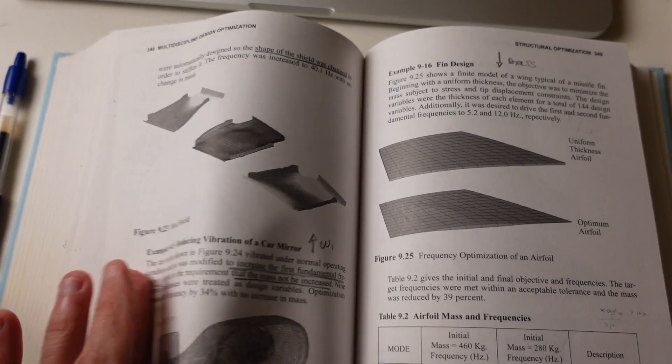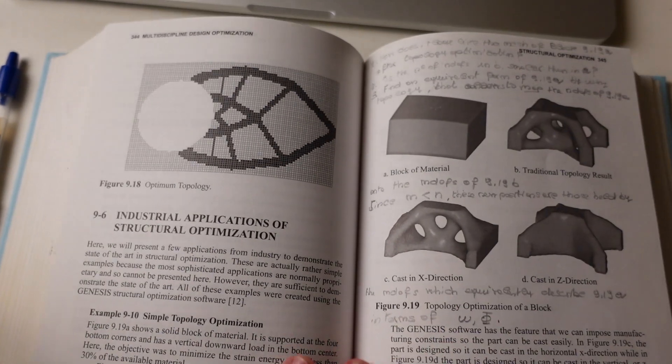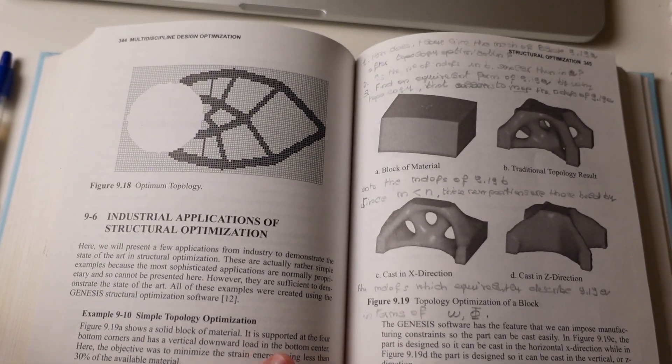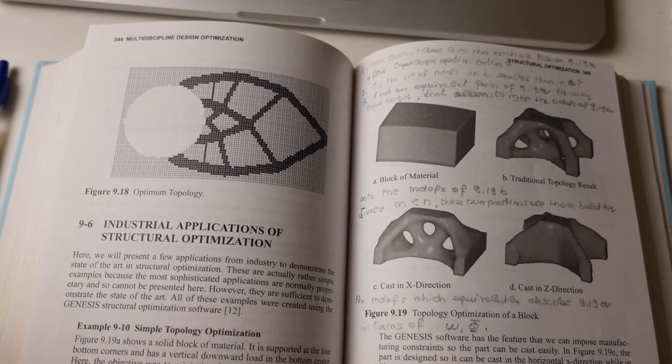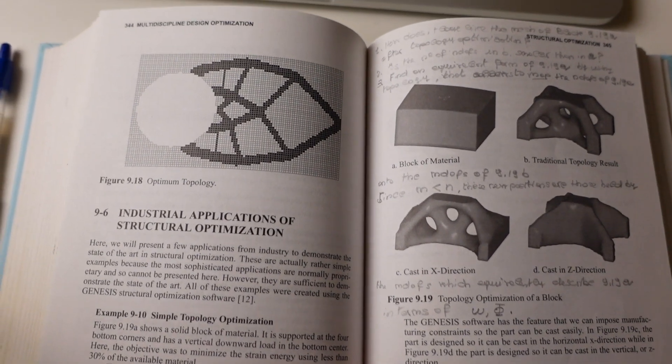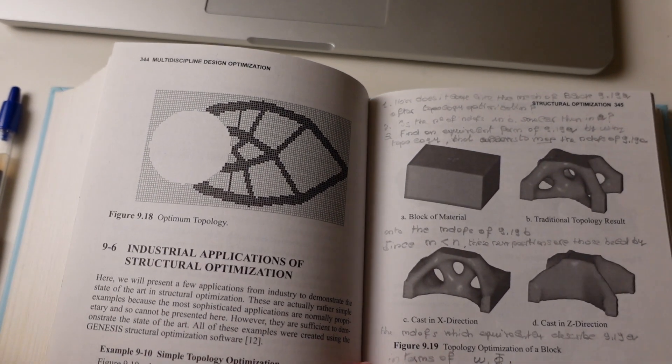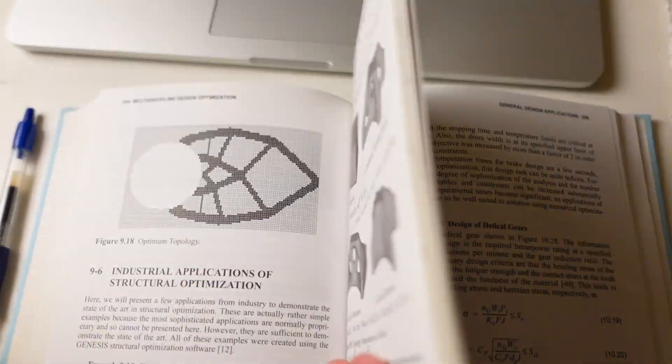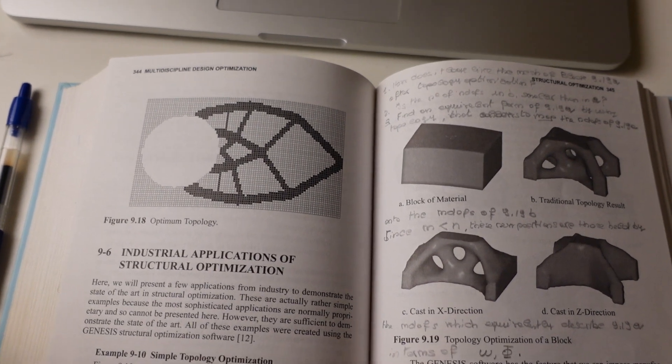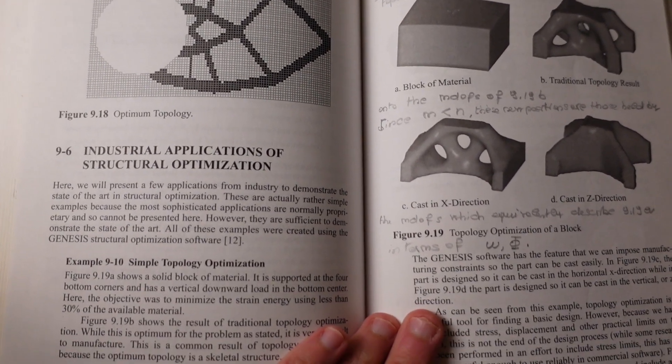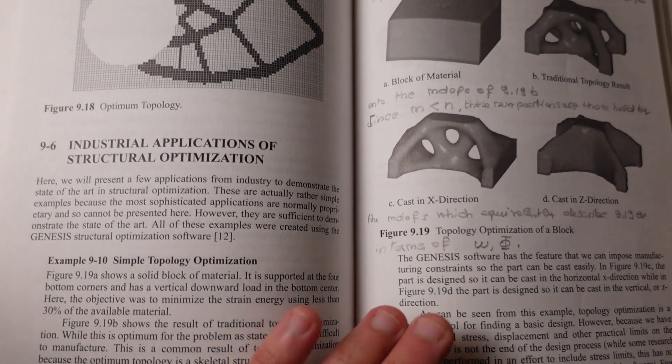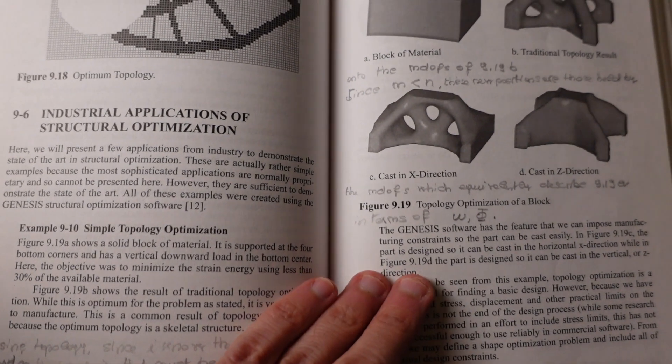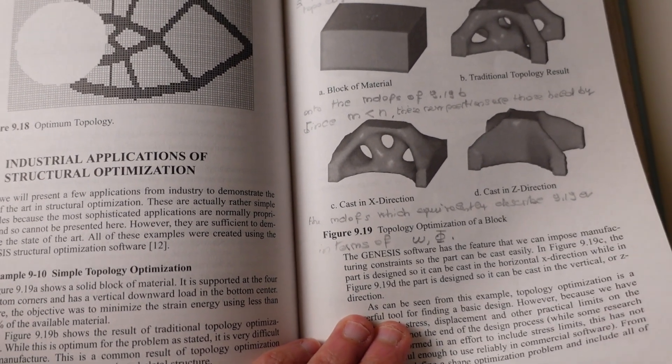Another interesting feature of the book is represented by the breadth of topics that van der Plaats deals with. As you can see here, this is a 344-page, basically almost 450-page book. So you will find applications, and that's good because it provides a big picture. Simple topology optimization, and you can see basically the range of applications.